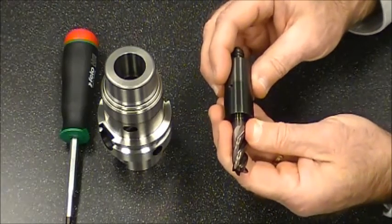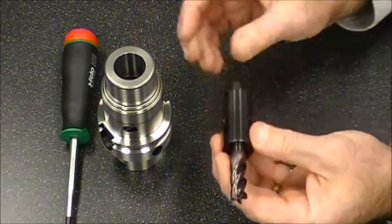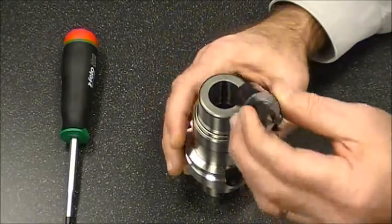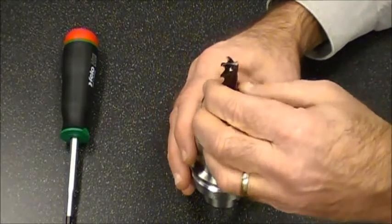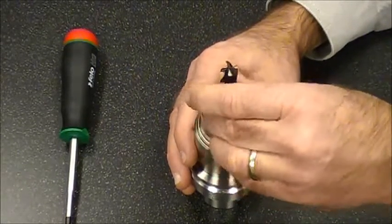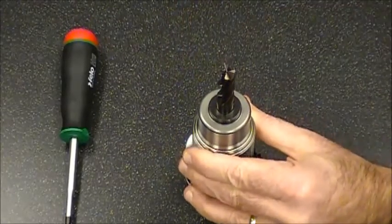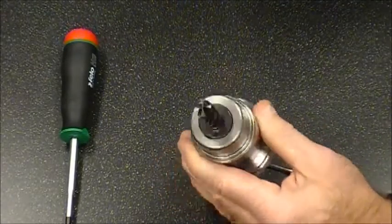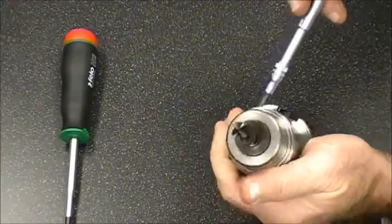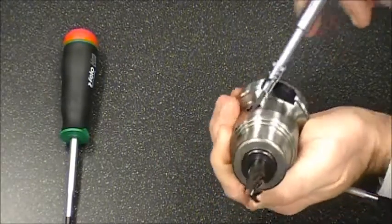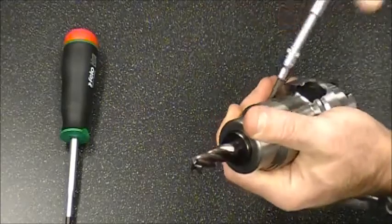Next, we insert it into the HPC milling chuck and tighten it down by hand. Then we can take an optional torque wrench that's set to 12 Newton meters. This is an audible type torque wrench where you tighten it until you hear the click.